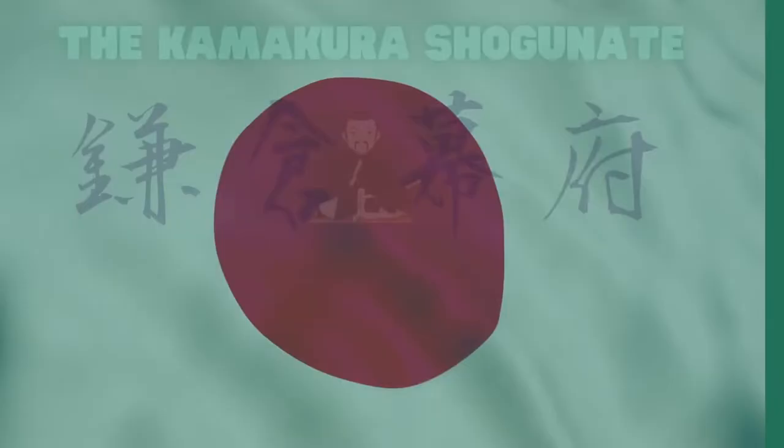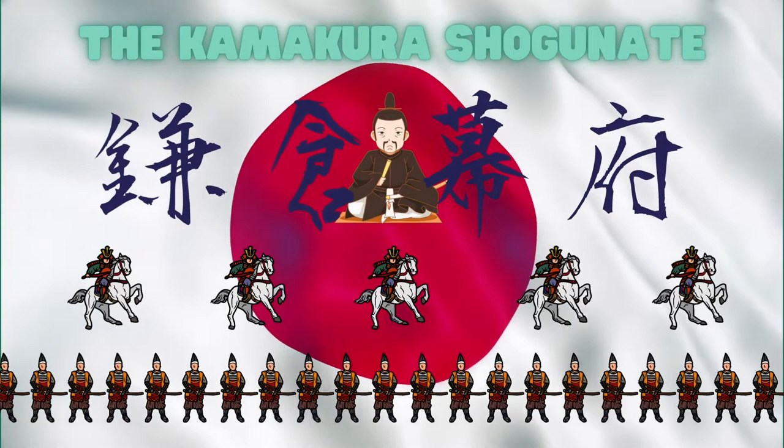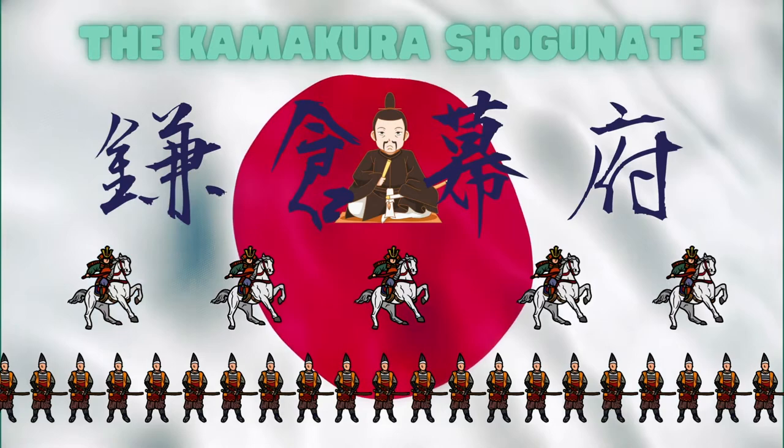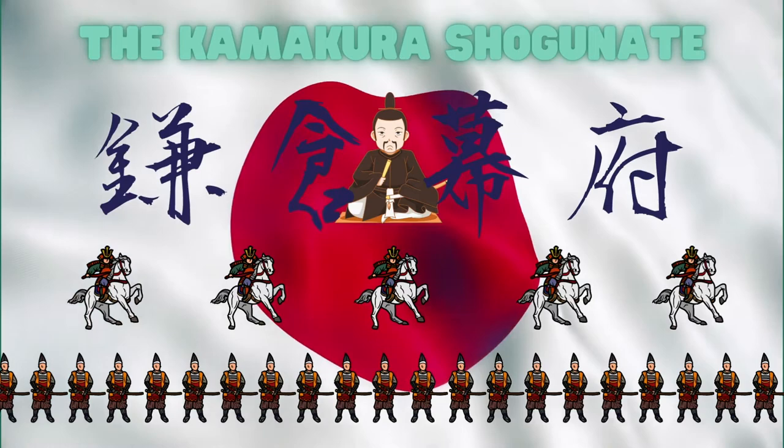In 1192, the Imperial Court appointed Yoritomo as shogun. This gave Yoritomo the position to command all the warriors in Japan. Yoritomo established a samurai government in Kamakura, far from the capital. This is called the Kamakura shogunate. The period when the shogunate was located in Kamakura is called the Kamakura period.